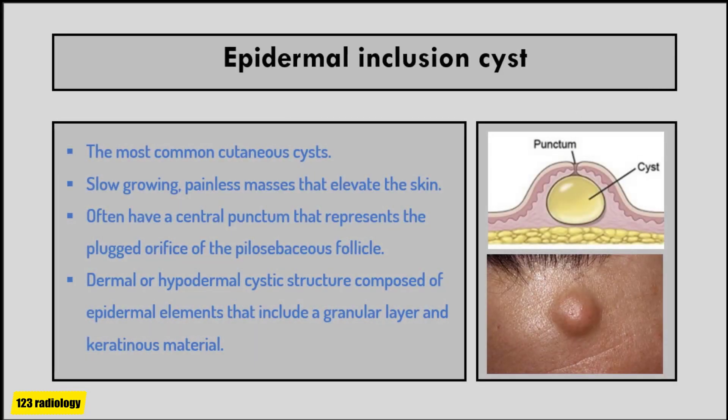Epidermal inclusion cysts are the most common cutaneous cysts. It is a slow-growing painless mass that elevates the skin and often has a central punctum that represents the plugged orifice of the pilosebaceous follicle. It is a dermal or hypodermal cystic structure composed of epidermal elements that include a granular layer and keratinous material.